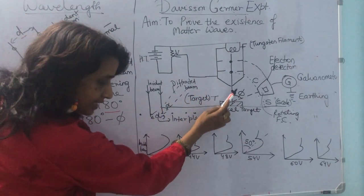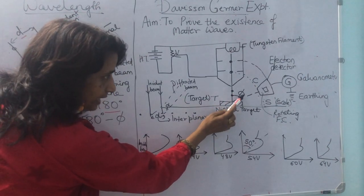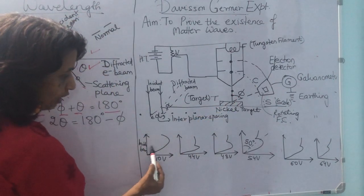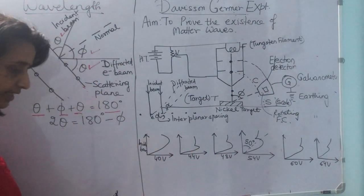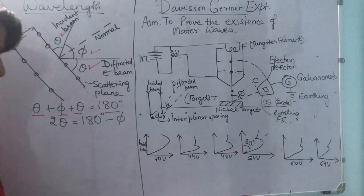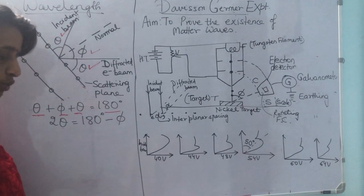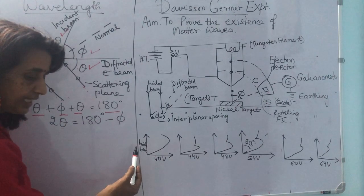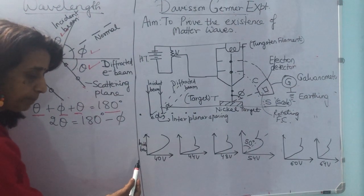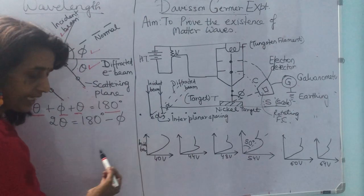A low potential is applied in the beginning so that electrons start coming out from the filament. Once they start coming, they drop on this target and we can keep varying the angles for different potentials. The observations are repeated for electrons accelerated through different potentials. The current is a measure of the intensity of the diffracted beam, which is plotted against the diffracting angle.